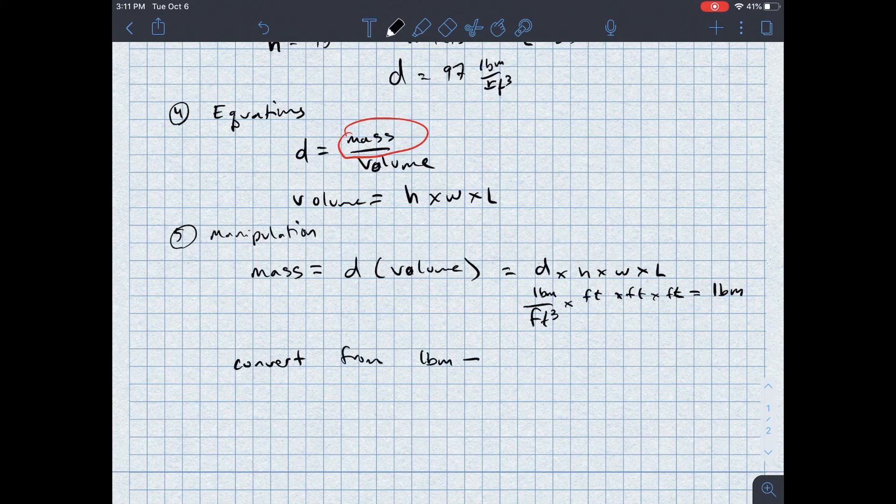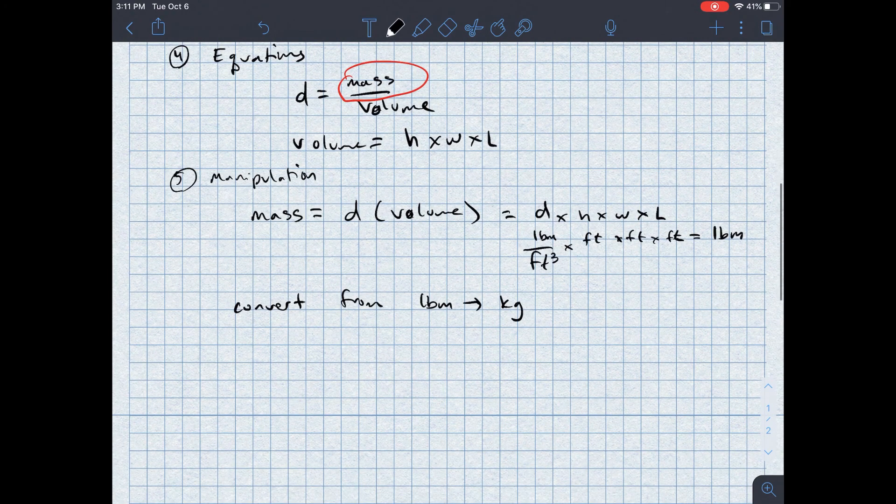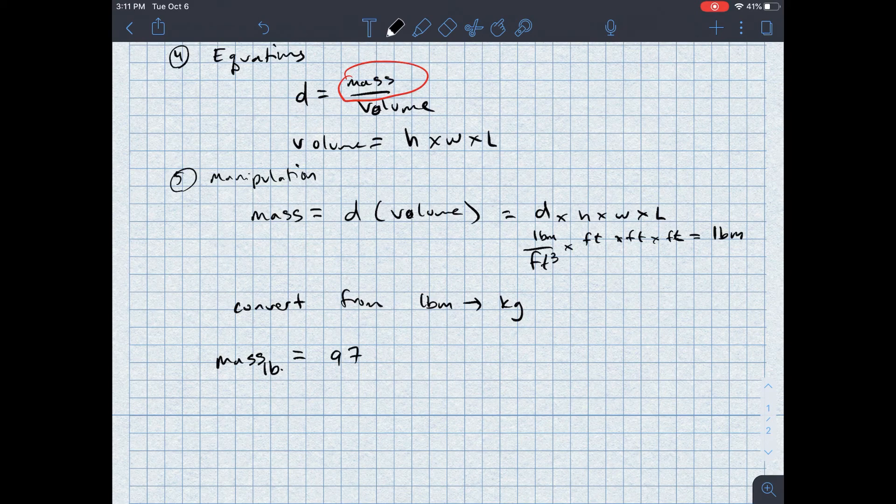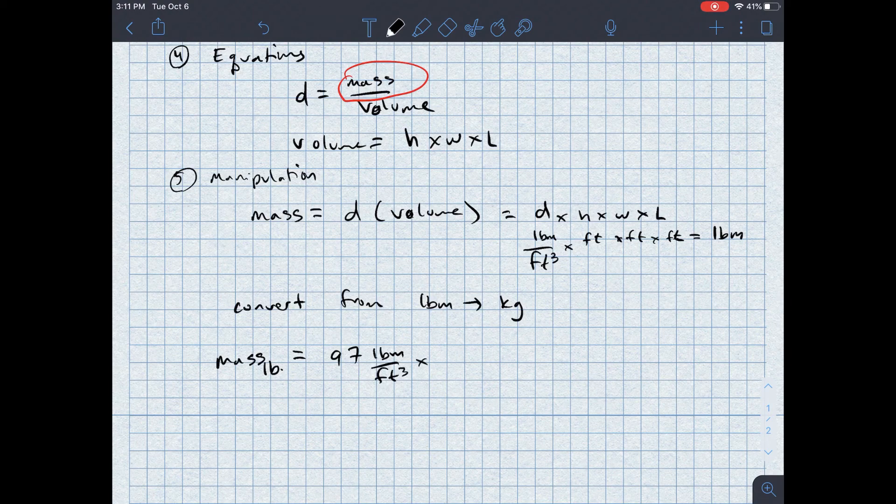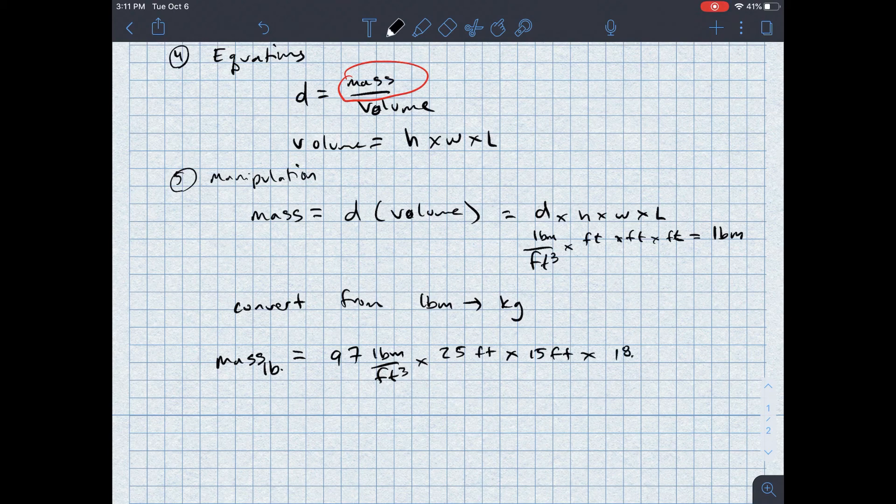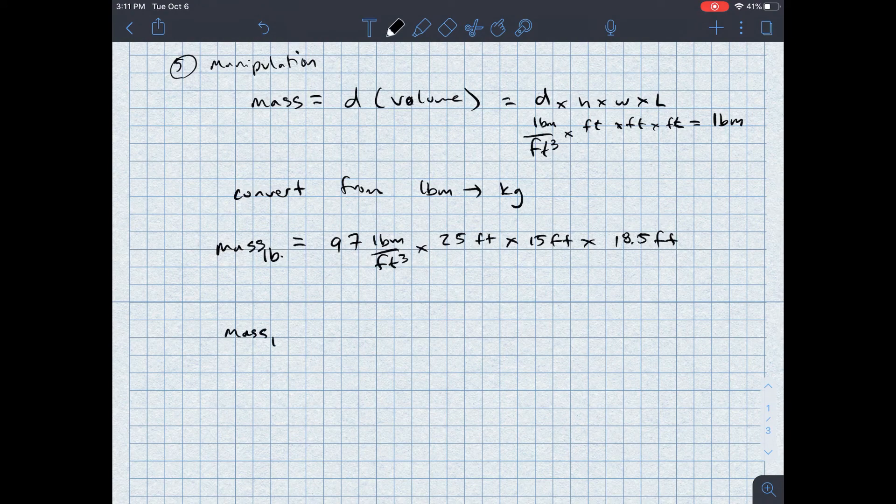I gave you that conversion factor earlier, but let's go ahead and find the mass in pounds. The mass in pounds is equal to the density, let's say, in 97 pounds mass per feet cubed times 25 feet times 15 feet times 18.5 feet. When I do this, I find a mass in pounds. You can pause here and put it into your calculator if you wish.